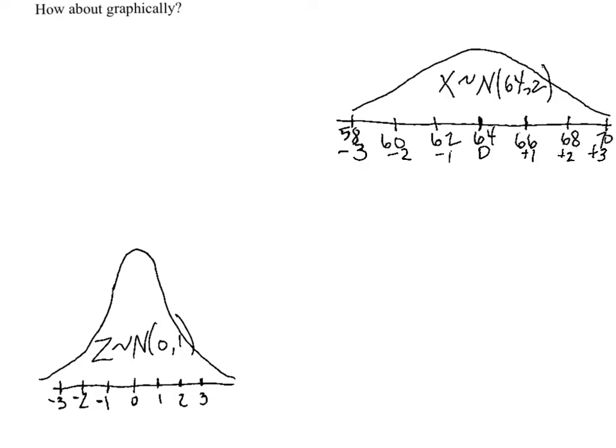Let's show how graphically we can visualize the relationship between any normal distribution. We'll use, for example, this one with a mean of 64 and a standard deviation of 2, its relationship to a standard normal.